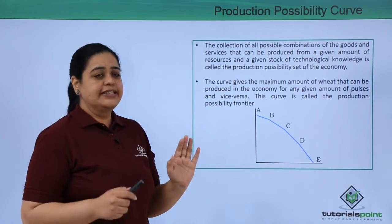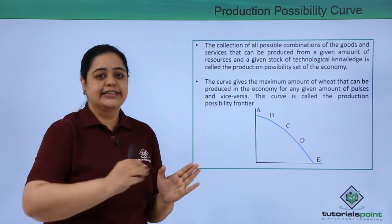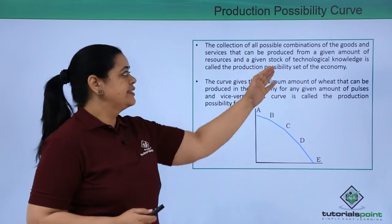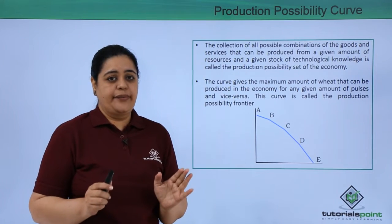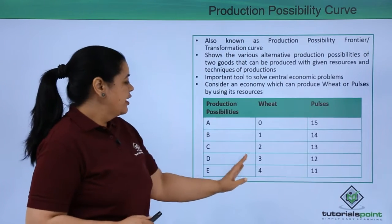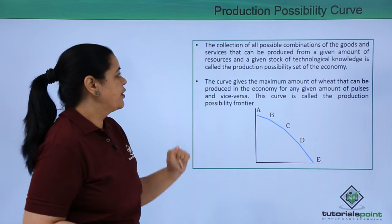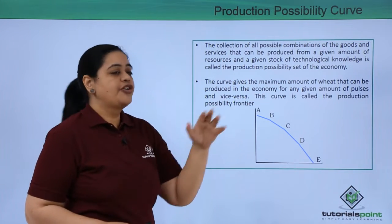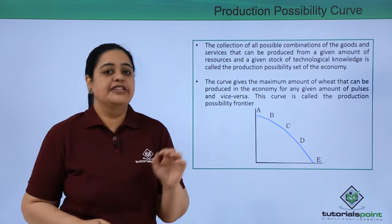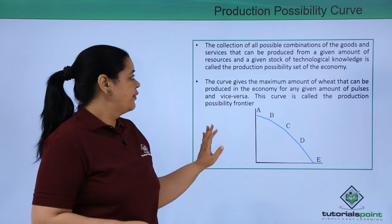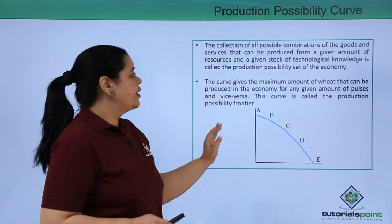The Production Possibility Curve tells you the collection of all possible combinations of goods and services that can be produced from a given amount of resources. As shown, it tells you how much wheat can be produced and, for a given amount of wheat, how much pulses can be produced. This is based on a given stock of technological knowledge, and it is called the production possibility set of the economy.